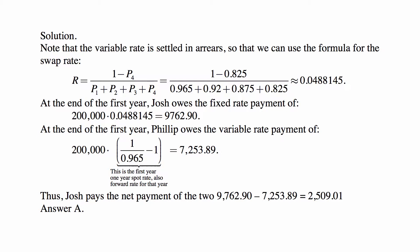You can see that Josh owes a bigger amount than Philip. What happens in practice is that those two are subtracted against each other and whoever ends up owing money pays that net amount. So Josh pays the net of the two, which is $2,509.01 — and that is answer A.